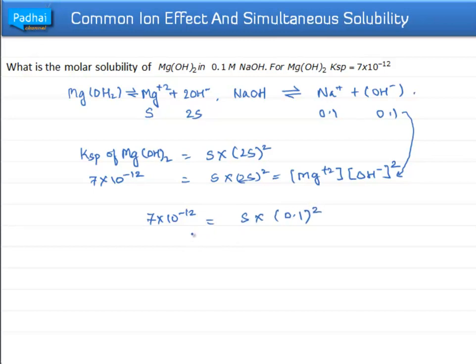From here, we find the solubility as 7 × 10⁻¹⁰. Here we use the common ion effect for finding the molar solubility of Mg(OH)2.